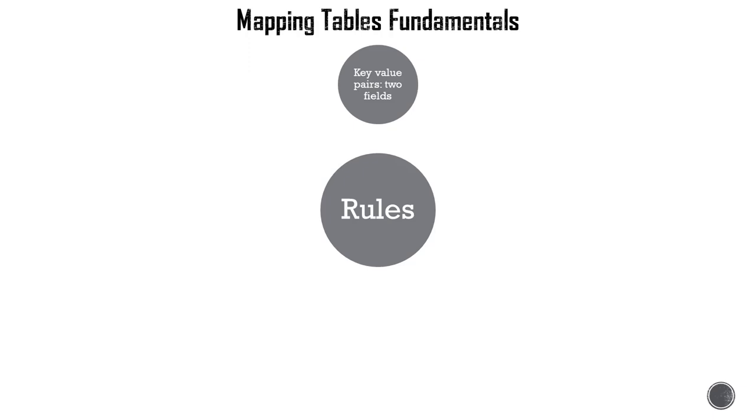Let's look at some of the important rules when you create a mapping table. It starts with a key-value pair. Mapping tables always have two fields. The first field is the key field, and the second is the attribute field.